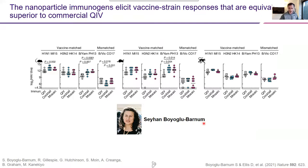The VRC led a series of immunization studies evaluating these particles. In three different animal models — mice, ferrets, and non-human primates — we found that both the cocktail and mosaic nanoparticle immunogens elicit vaccine-matched responses roughly equivalent to current commercial vaccines. Looking at HAI against all four components, we're getting equivalent or perhaps slightly superior responses to current commercial vaccines.